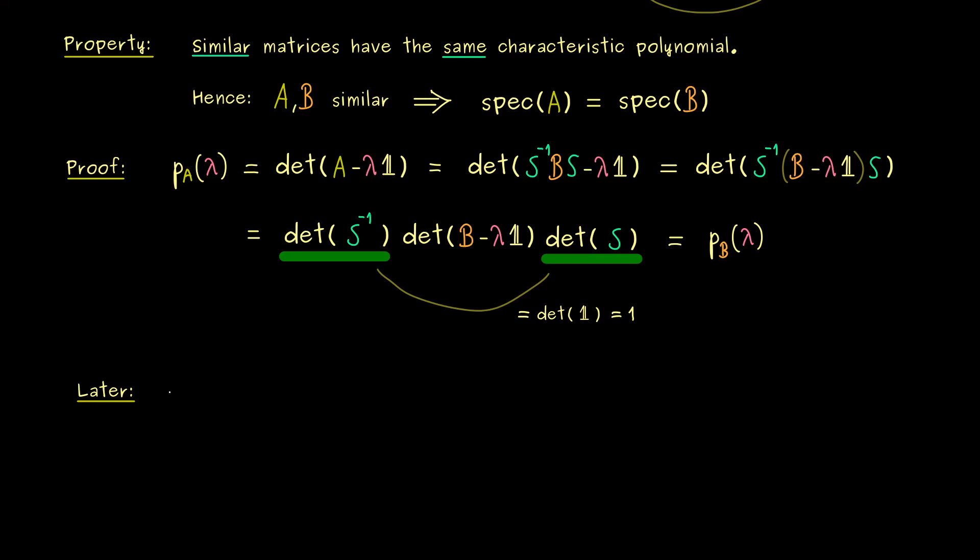Now, the first very important result I can already tell you, is that every normal matrix is similar to a diagonal matrix. So for example, a self-adjoint matrix is a normal matrix. And now, being similar to a diagonal matrix means that we find an invertible matrix S.